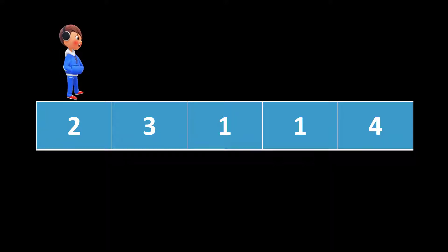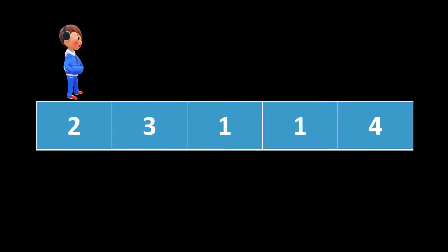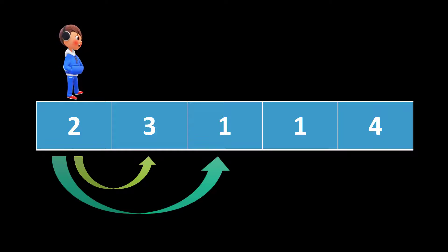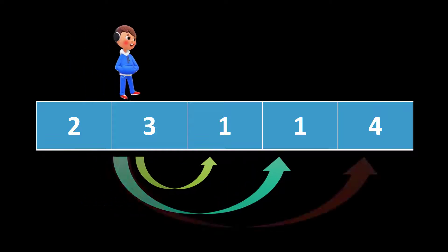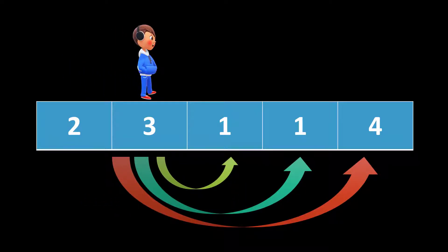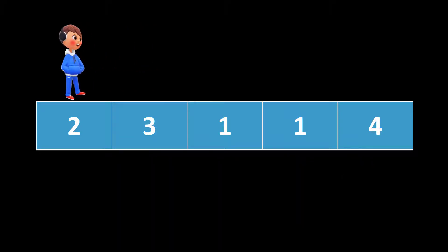The question says that we are standing at the zeroth index. In this case, index zero has the value two. This value two means that we can make at most two jumps from this particular index. Similarly, the value three at index one means that from index one we can make at most three jumps. We start at the zeroth index and need to reach the last index of this particular array.